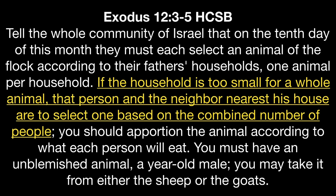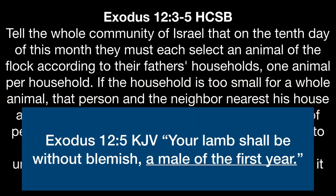It's been probably 10 to 12 years ago that we made the switch in the age of the lamb we slaughter for the Passover. Formerly we used a male in the first year of its life, and we got that from the King James Version's rendering of verse 5, which says your lamb will be without blemish, a male of the first year. We thought the phrase 'of the first year' referred to a sheep or a goat from birth up until one year old.